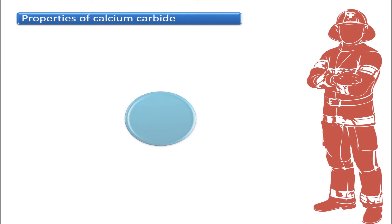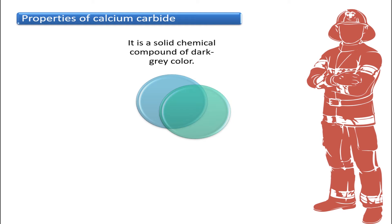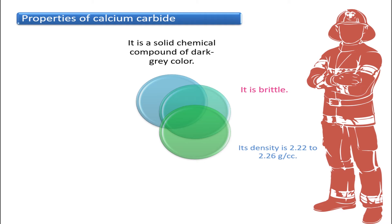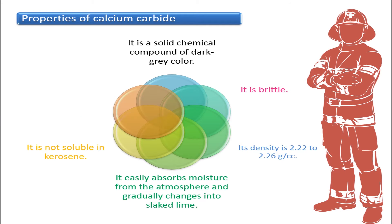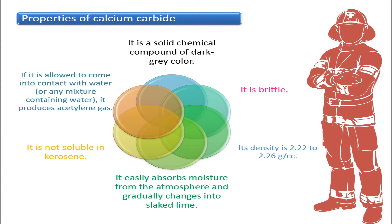Properties of calcium carbide: Calcium carbide is dark gray in color. It is brittle. Its density is 2.22 to 2.26 grams per cubic centimeter. It easily absorbs moisture from the atmosphere. If it is allowed to come into contact with water, it produces acetylene gas.